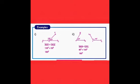Therefore, 80 degrees and 100 degrees are called supplementary angles. If two angles are given, we can find whether they are complementary or supplementary by adding them. But if one angle of a complementary pair is given, how do we find the other angle? Similarly, if one measure of a supplementary pair is given, how do we find the other?